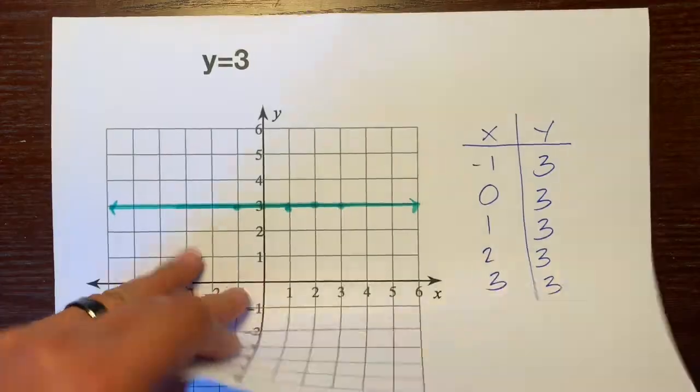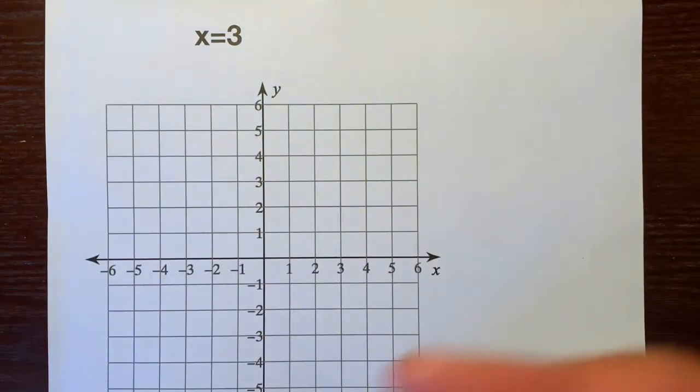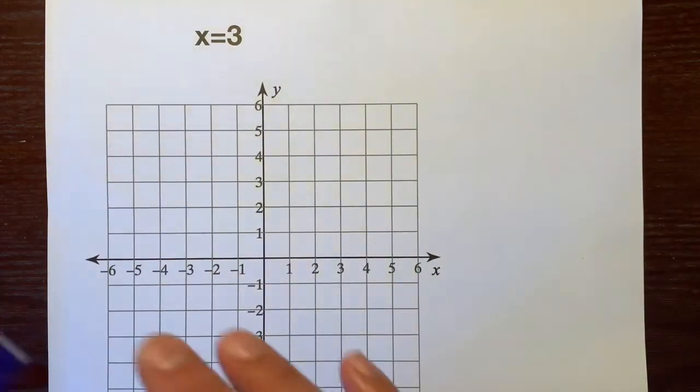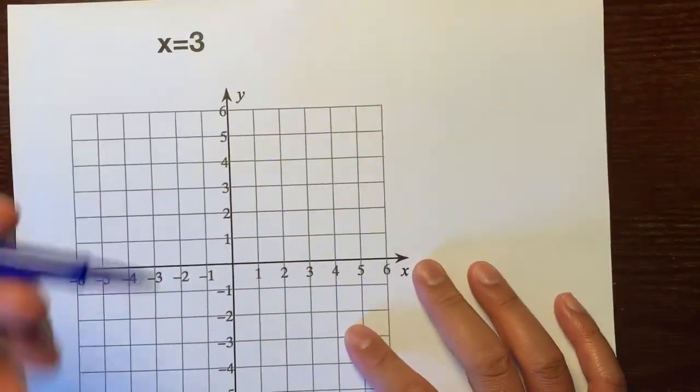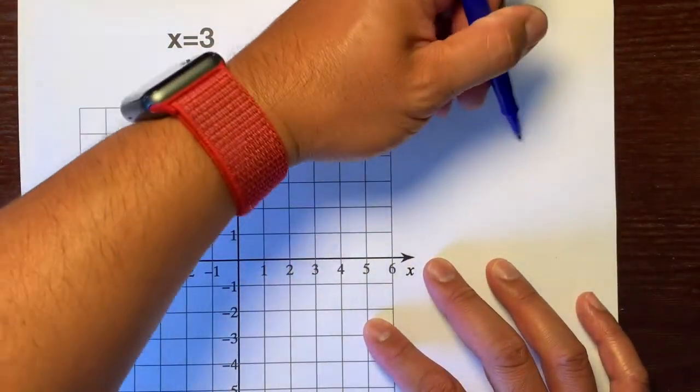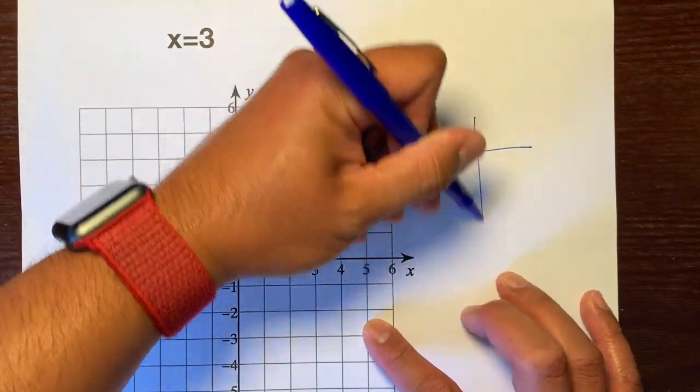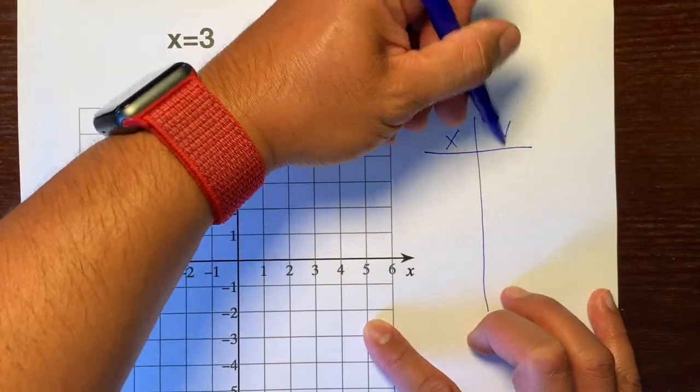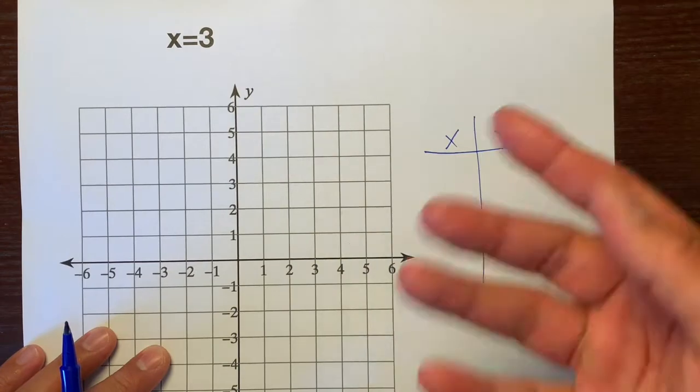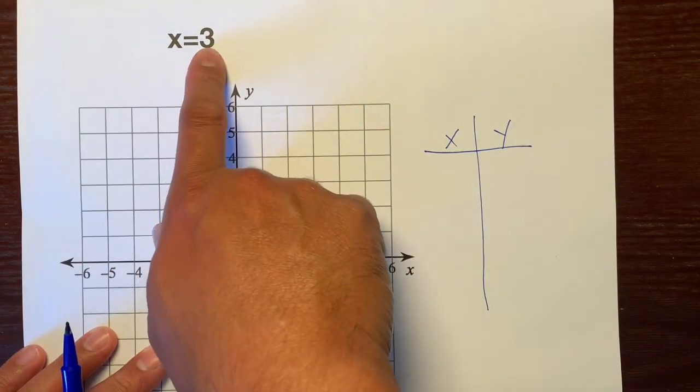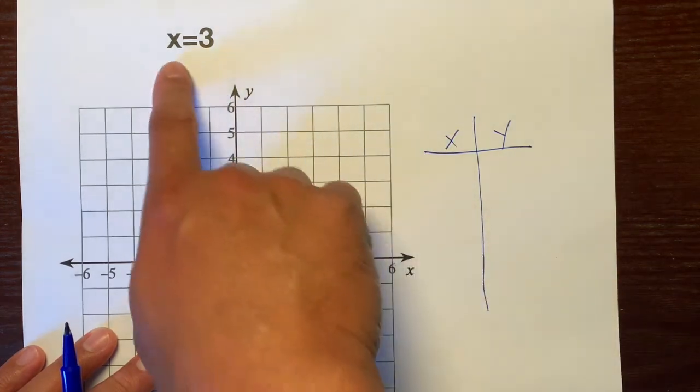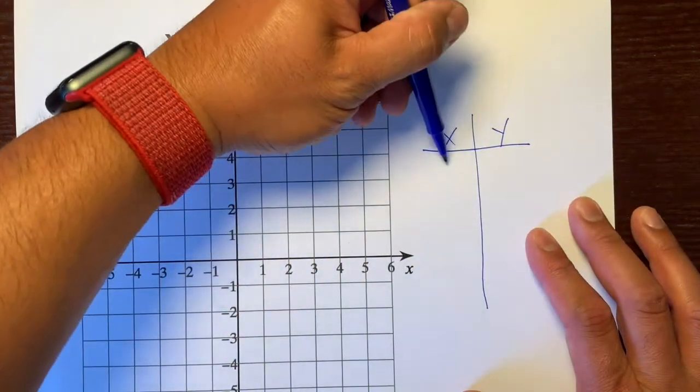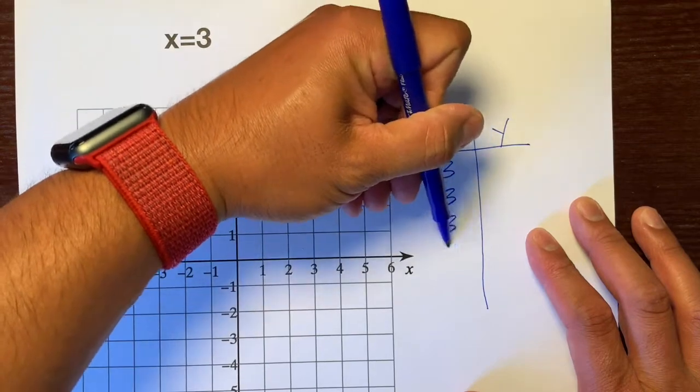Now, let me show you what happens when x equals 3. I think you could imagine it, but let me show you just so it sticks in our heads forever. Instead of using slope-intercept form, let's do a t-table. x on this side, y on this side. This time, if you notice, x always equals 3. So we can't change the x, because x always equals 3. So we'll put 3, 3, 3, 3, 3.